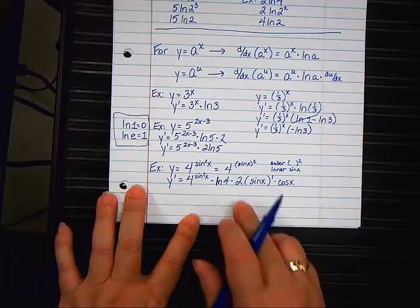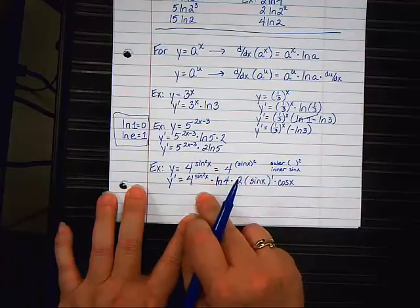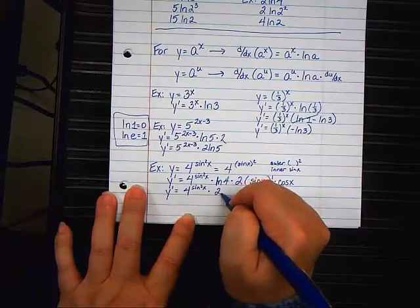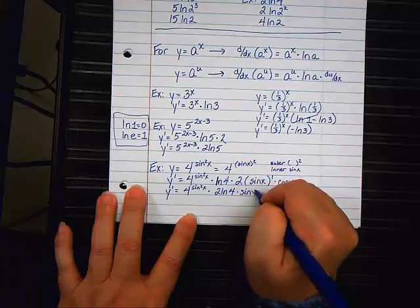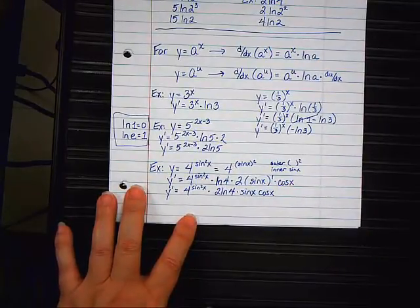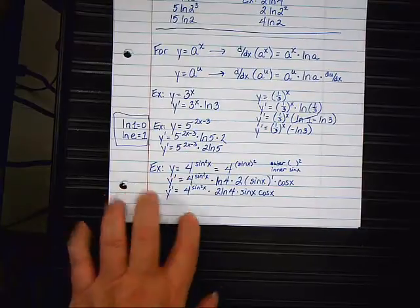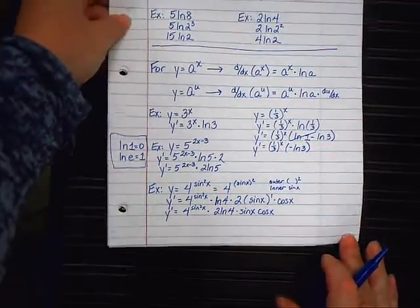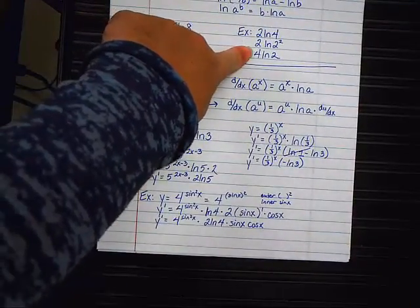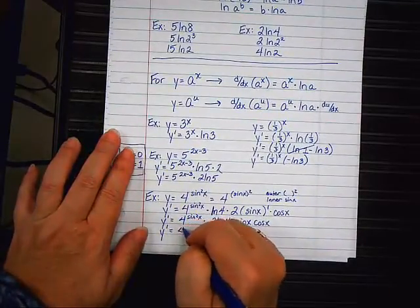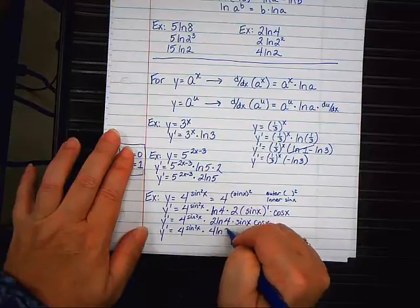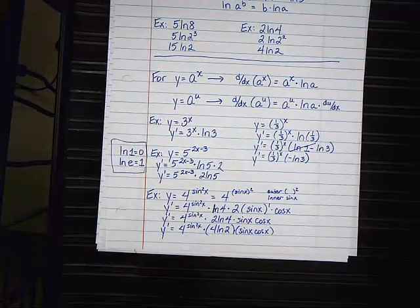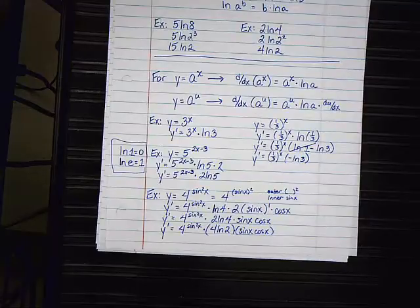Let's clean it up a little bit. This two, just like the two from here, can move in front of the natural log. So, y prime equals four sine squared x times two natural log of four times the sine of x cosine of x. Am I done? No. Because natural log of four is not as small as it can be. Now, didn't I already do this problem? Yes, I did. Look up here. Two natural log of four simplifies to four natural log of two. So, I'm just going to jump to the answer. Y prime equals four sine squared x times four natural log of two times sine of x. Now, some people like all of this in parentheses. It can go either way. But that is the final answer. Do you have any questions?